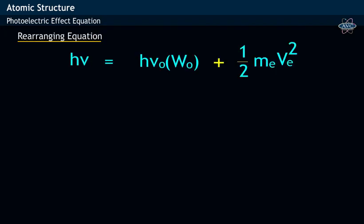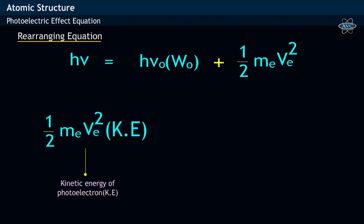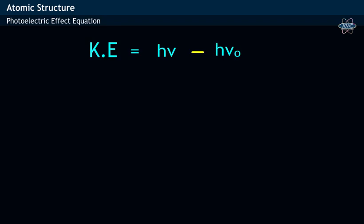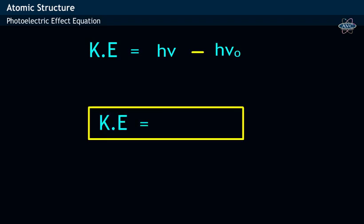On rearranging the equation, the kinetic energy of photoelectron equals the difference in energies of incident radiation h nu and work function of a metal h nu0 or W0. This equation may be simplified as h(nu minus nu0).